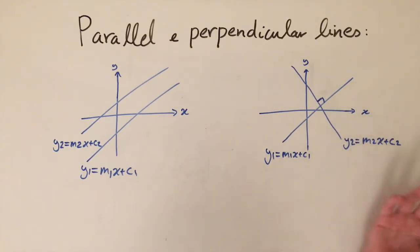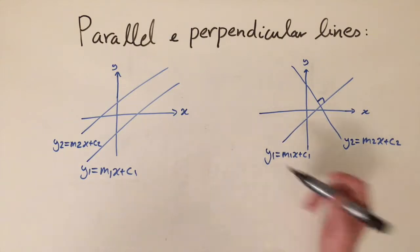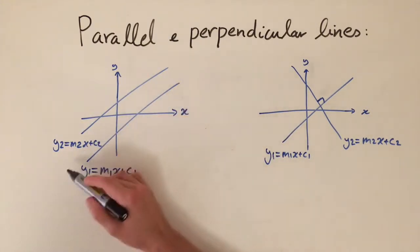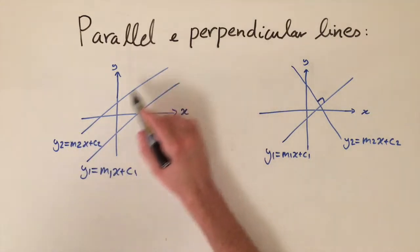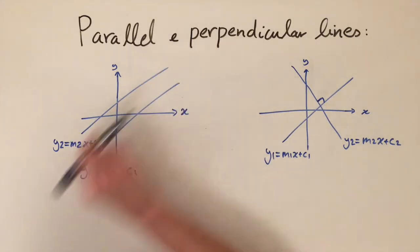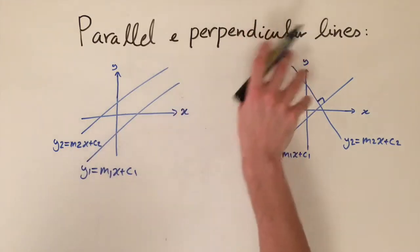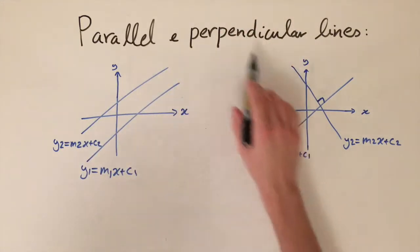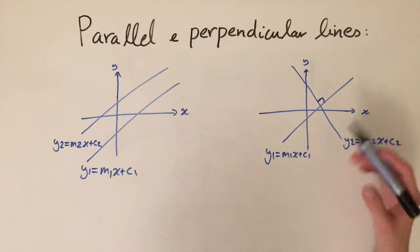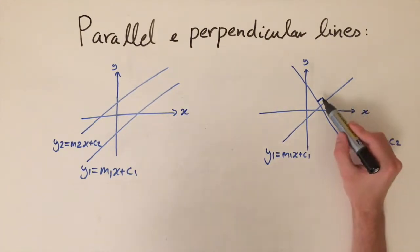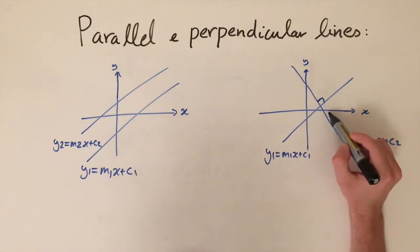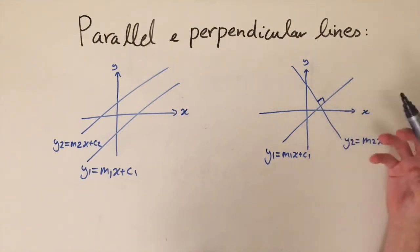Parallel lines are two lines that sit side by side and they never meet — they never cross each other and they both go towards infinity forever, never touching. Perpendicular lines are lines that do meet, and they meet in a very special way: they form a right angle, so this angle here is exactly 90 degrees.